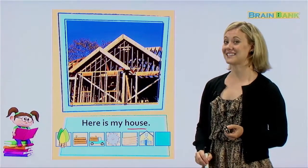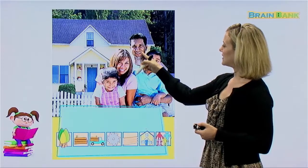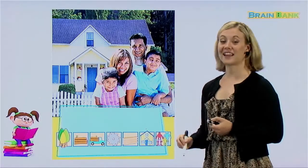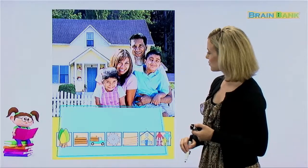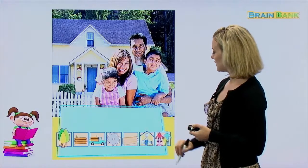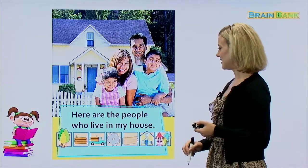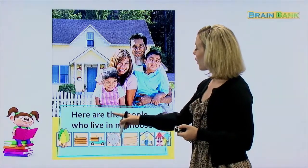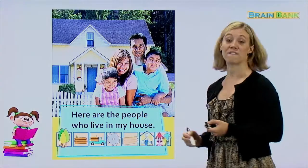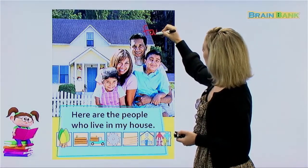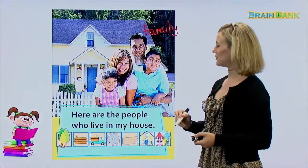But finally, we're on the last step. Here is a mom, a dad, two children. It looks like this is a family, and it looks like maybe they live in that house. That's a beautiful house, don't you think? I think those builders did a really nice job. So let's see what step seven says: Here are the people who live in my house. Let's read it all together: Here are the people who live in my house. These are all the people that live in the house. They are a family — F-A-M-I-L-Y — family. And they live in this house.